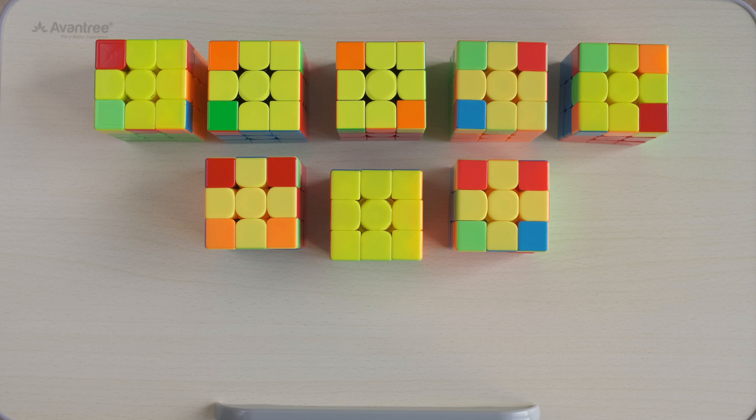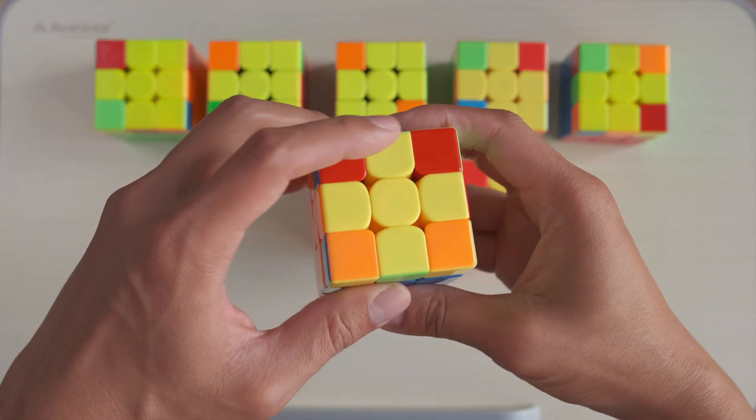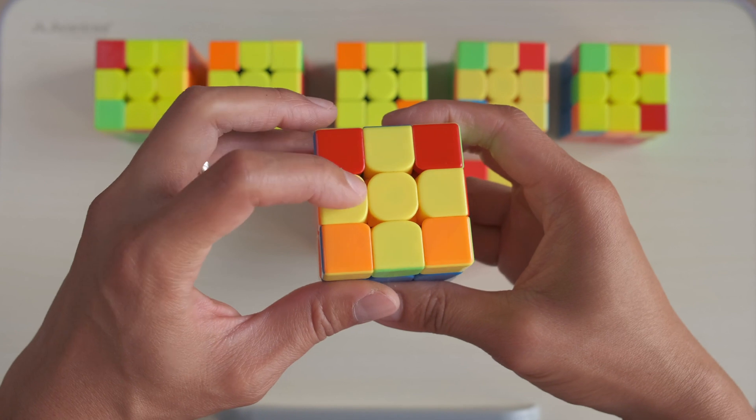After F2L, we need to orient the last layer of the cube so that we have one full color on the top. In this video, I will focus on yellow as the last layer. What we need to do now is create a yellow cross with the 4 yellow edge pieces.